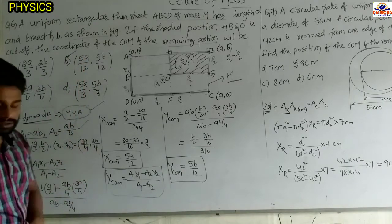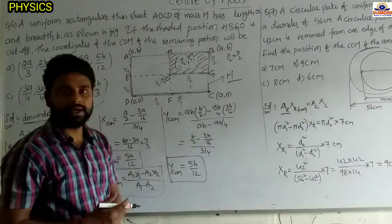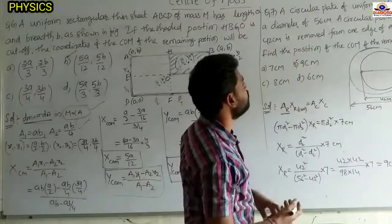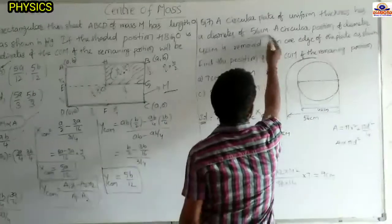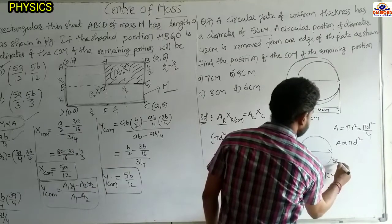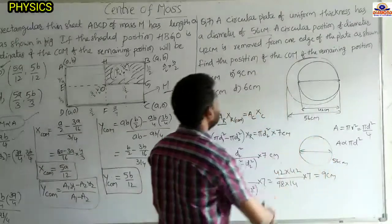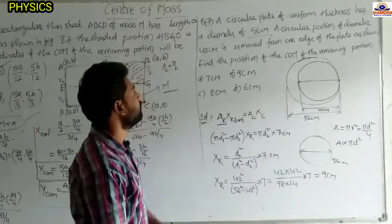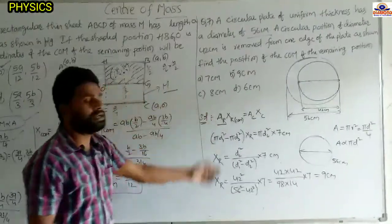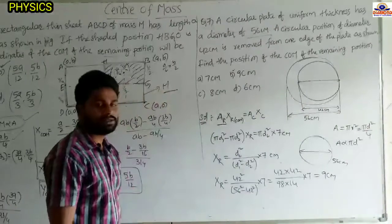These problems are somewhat lengthy but easy. We can expect questions like this from center of mass. Next question: A circular plate of uniform thickness has diameter 56 cm. A circular portion of diameter 42 cm is removed from one edge of the plate. Find the position of the center of mass of the remaining portion.